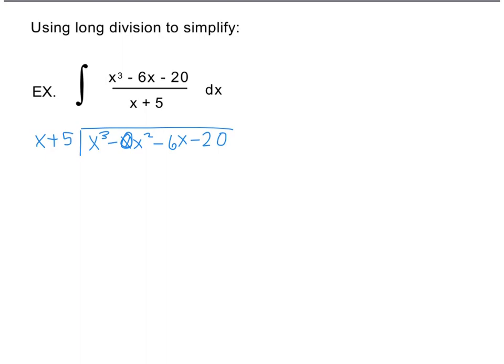So the first thing I want to do is I know x times x squared is going to get me x to the third. x squared times 5 is 5x squared. I'm going to subtract. So this is negative 5x squared minus 6x. So I'm going to bring this down. Back to the top. I'm going to say minus 5x. So if I do that, that's going to be negative 5x squared minus 25x and add.